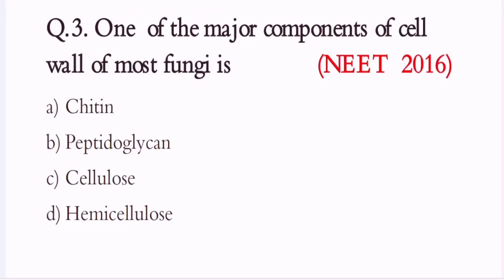Question 3. One of the major components of cell wall of most fungi is: A. Chitin. B. Peptidoglycan. C. Cellulose. D. Hemicellulose. The correct option is A. Chitin.